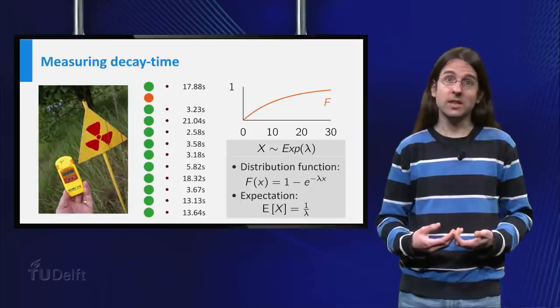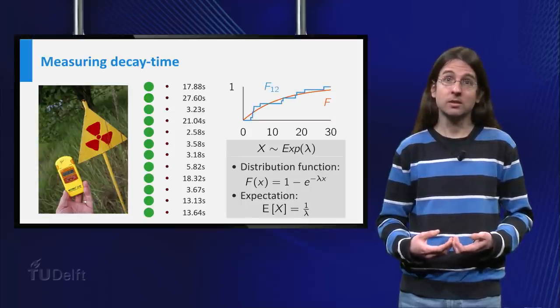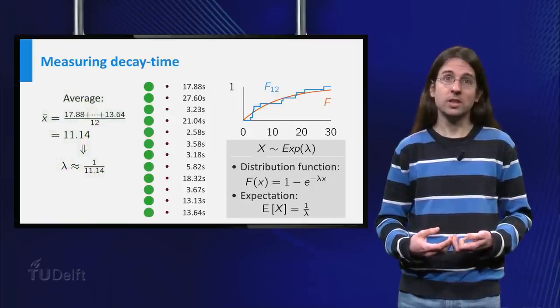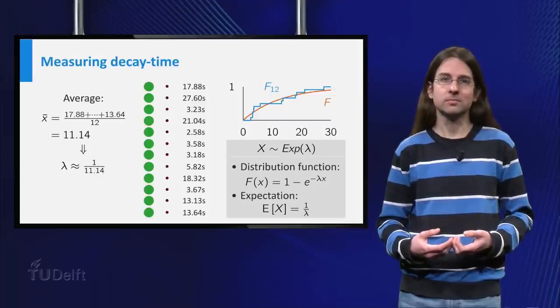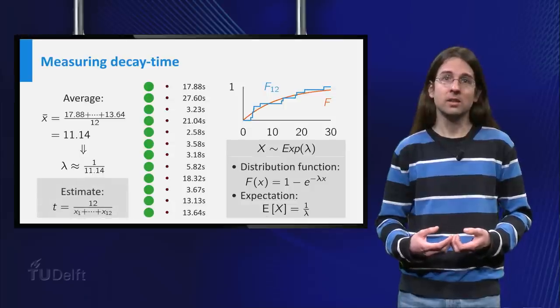Well, you know that the expected value of the decay time equals 1 over lambda. And by the law of large numbers you know that the average decay time approaches the expectation after taking sufficiently many measurements. Thus a good estimate for the value of lambda might be 1 over the average decay time.